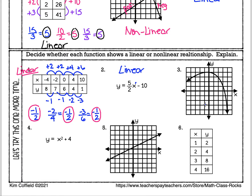Number three: hopefully we can tell that this graph is not linear, because it does not make one continuous straight line — there's a big curve in it. So this one is nonlinear. The reason is the line is curved, and that big curve tells us right away that it is not linear.